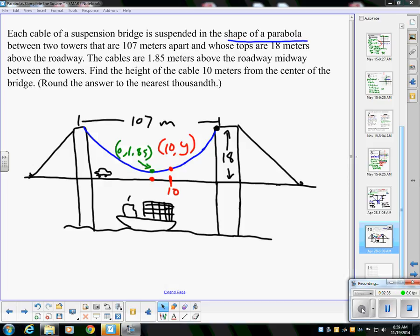It says find the height of the cable 10 meters from the center of the bridge. You'll notice in red I have 10 comma y, so what I want to know is when x is 10, what is y.